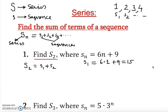s₁ = 6(1) + 9 = 15. And s₂ = 6(2) + 9 = 21. Now all we do is plug these in: 15 plus 21.